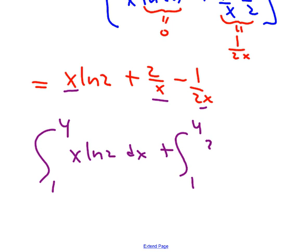I think I'm going to write this as three separate integrals. Plus the integral from 1 to 4, 2 over x dx. Plus the integral, oh, I should say minus actually. So we have minus the integral from 1 to 4. I'll just write this 1 over 2x dx for now. Okay. Let's go through each one of these separately.